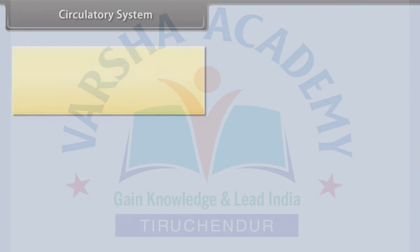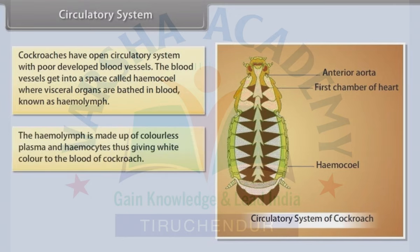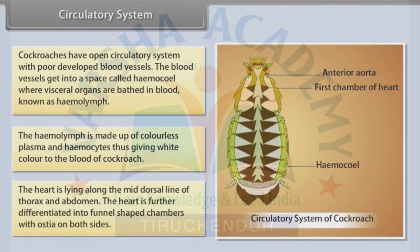Circulatory system: Cockroaches have an open circulatory system with poorly developed blood vessels. Blood vessels open into a space called haemocoel, where visceral organs are bathed in blood known as haemolymph. Haemolymph is made up of colorless plasma and haemocytes, giving white color to the blood. The heart lies along the mid-dorsal line of the thorax and abdomen, differentiated into funnel-shaped chambers with ostia on both sides.